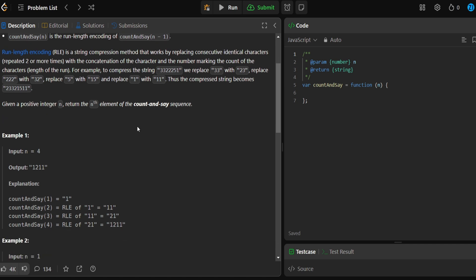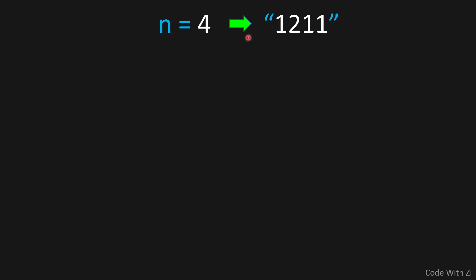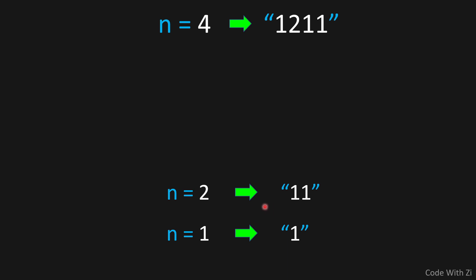If we check the Count and Say example — this question is a little vague, but I'll explain everything in the slides. Our input is a number like 4, and we have to return a specific result. Why is 4 equal to that number? The description said Count and Say of 1 equals 1. Count and Say of 2 equals 1 and 1, because when we count Count and Say of 2, we look at the previous result and ask how many occurrences of this number we have — we have one occurrence of the number 1.